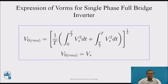Now, the expression for V0 rms for the single-phase full-bridge inverter. V0 rms is equal to [1/T × (integral from 0 to T/2 of Vs² dt + integral from T/2 to T of Vs² dt)]^(1/2). Therefore, V0 rms is equal to Vs. So the RMS value for the single-phase full-bridge inverter is the same as the supply voltage.